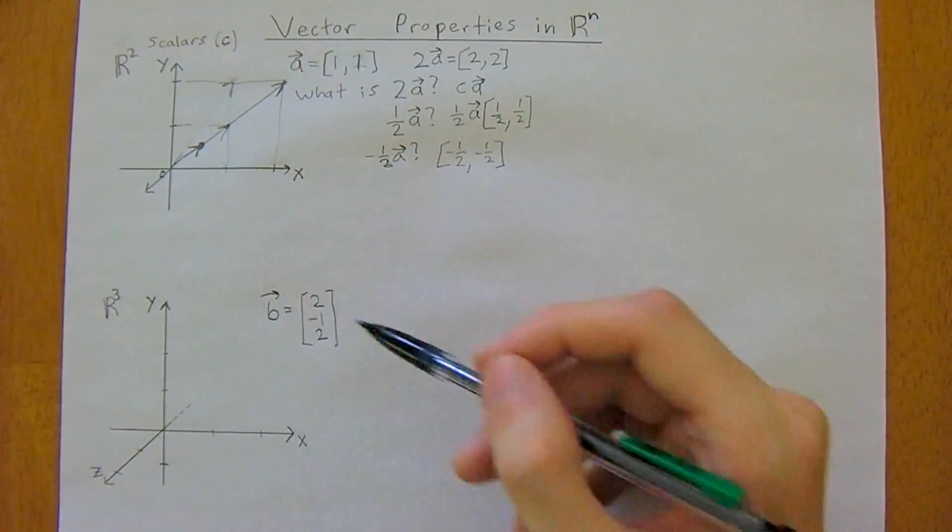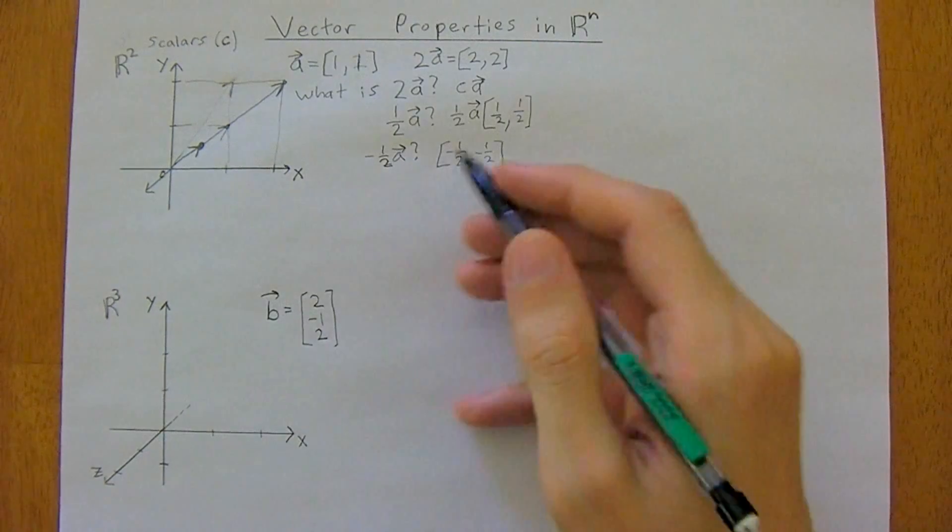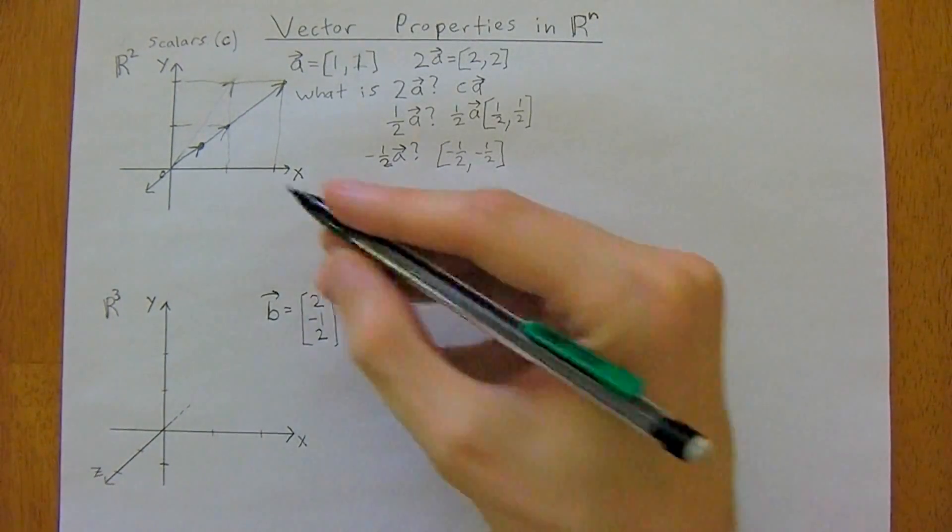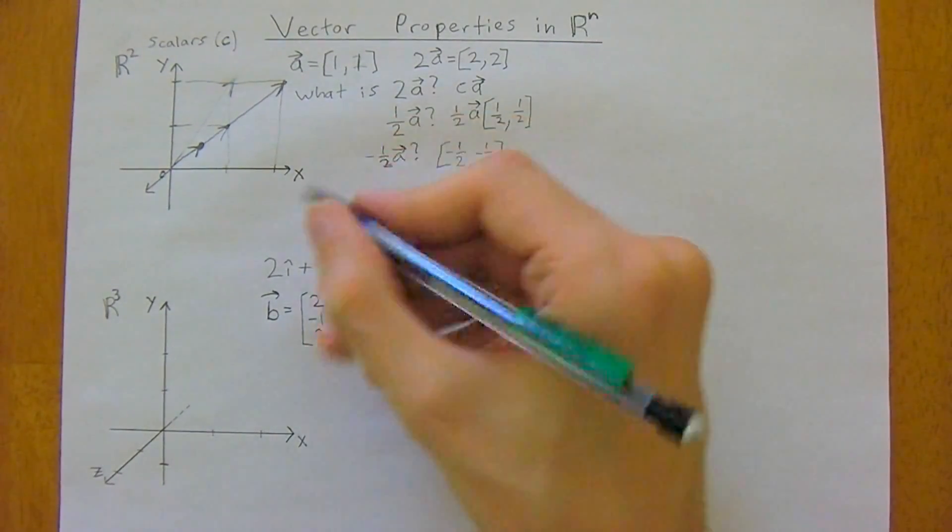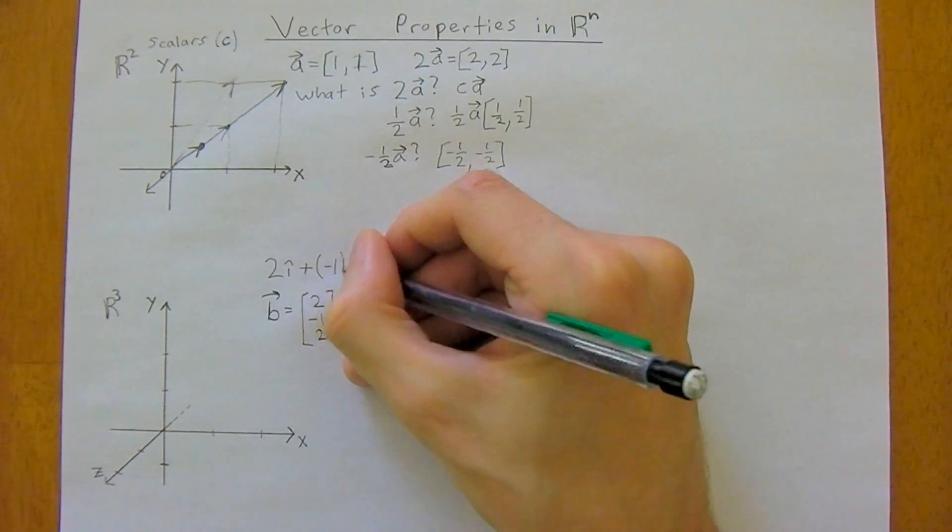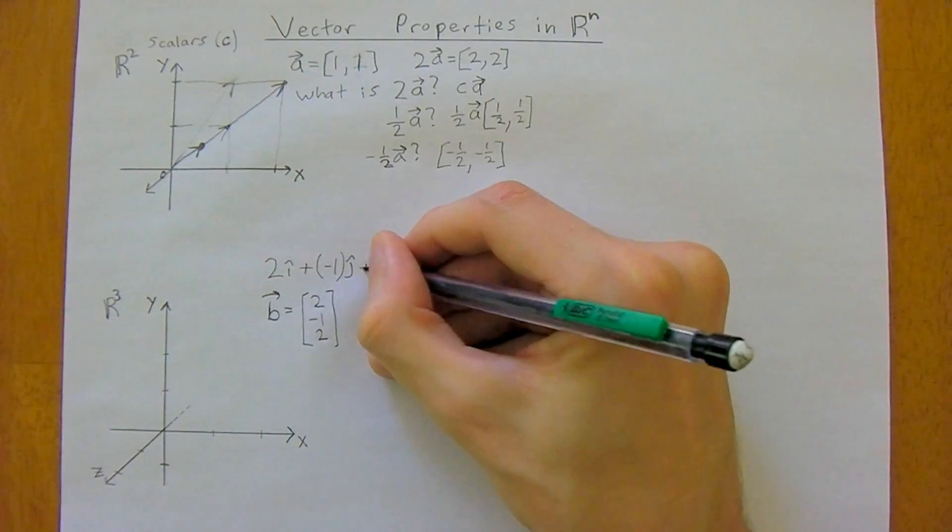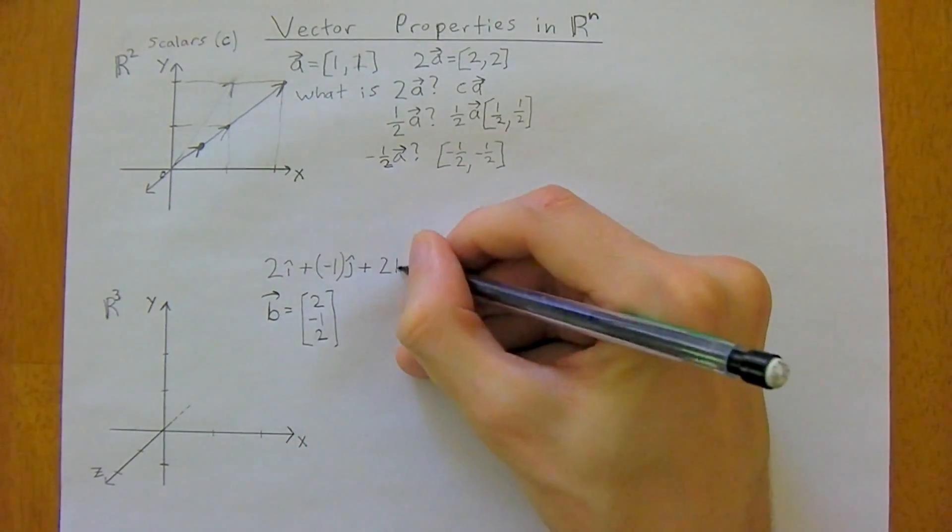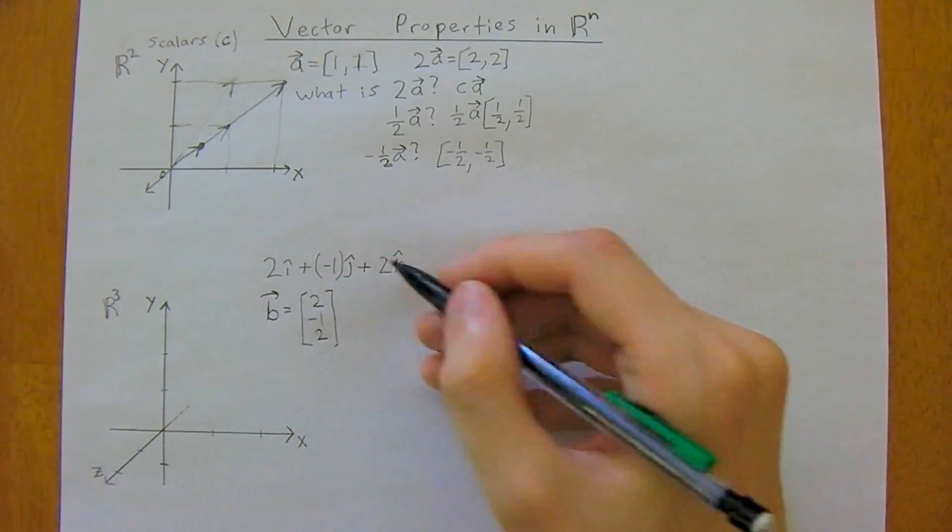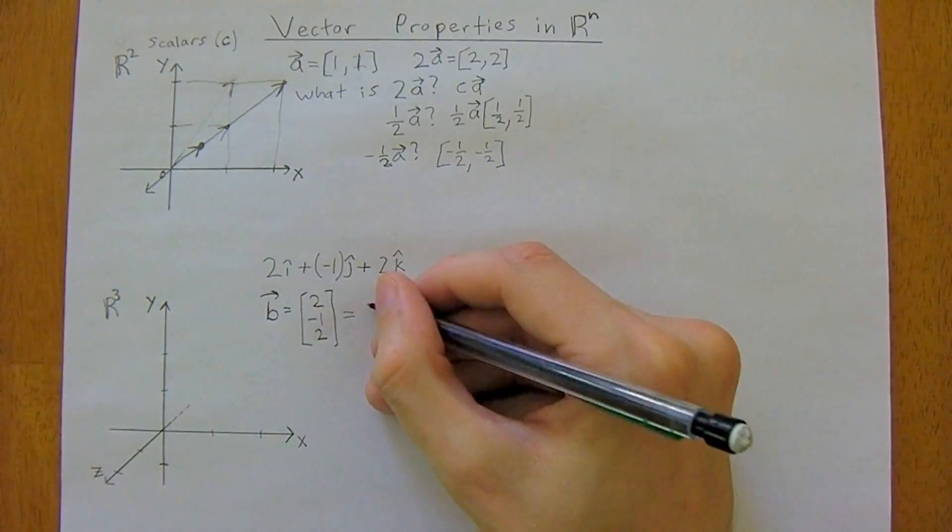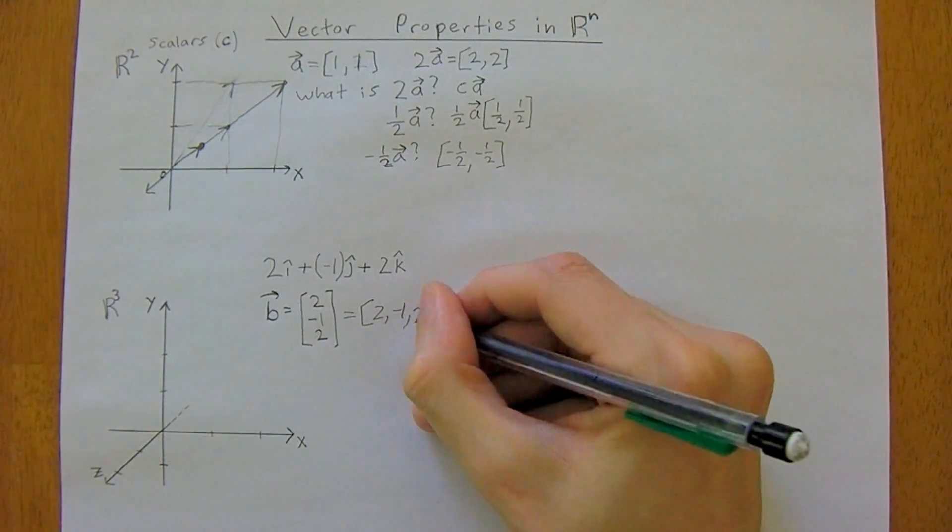So now, just to get you used to R3 a little bit before we enter the properties, so say you wanted to graphically draw this, and remember that another way you can write this in component form is 2i hat, i hat denotes the unit vector in the direction of x, and plus negative 1, for the y axis we have j hat, and plus 2 for the z axis we have the unit vector k hat. So that's just another way you could represent it, or you could represent it like this, and they're all identical, just different ways to represent the same vector, just to get used to the notation.